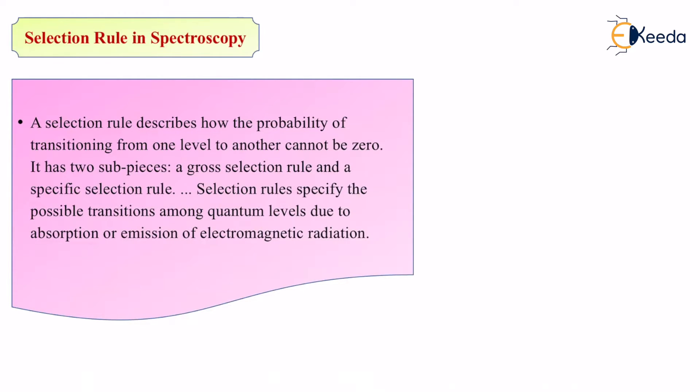These selection rules can be of two types. The first is known as gross selection rule, and the second is known as specific selection rule.